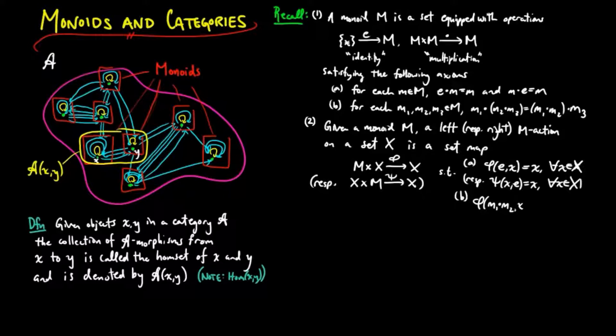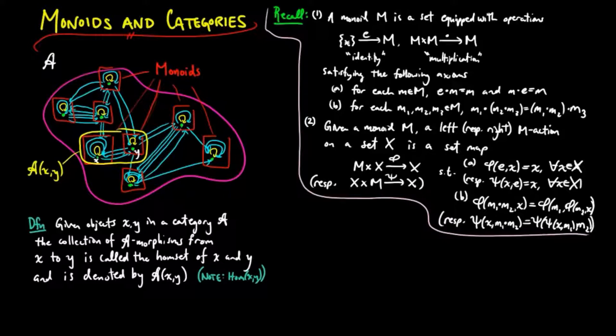And B, phi of M1 times M2, X is equal to phi of M1, phi of M2, X. Respectively, psi of X, M1 times M2 is equal to psi of psi of X, M1, M2 for each pair of elements M1 and M2 in M, and for each element X in X.